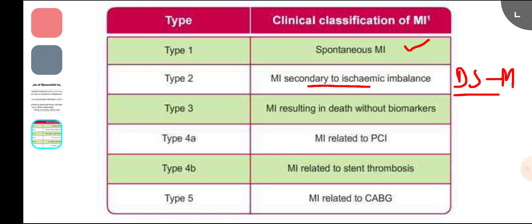Type 3 MI occurs because of sudden cardiac arrest. There will be ST changes and new LBBB changes, but death occurs before cardiac biomarkers are sent or before they appear in the blood. That is type 3.